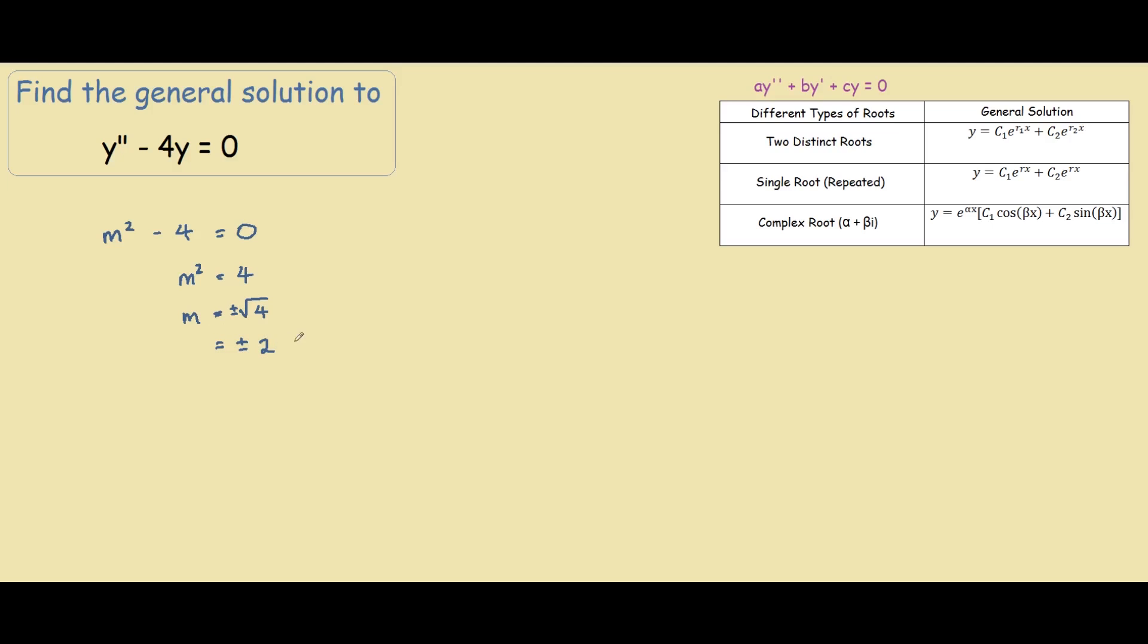This gives us two distinct roots for our general solution. So we look at this row over here, two distinct roots, and our general solution is this equation over here.